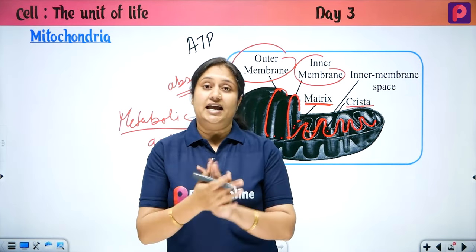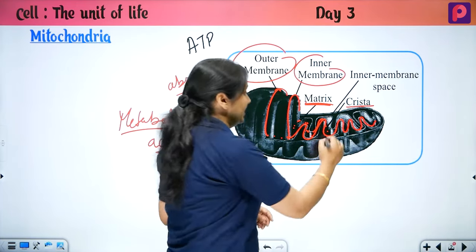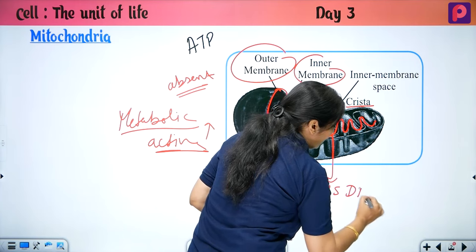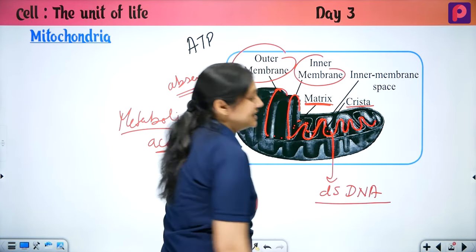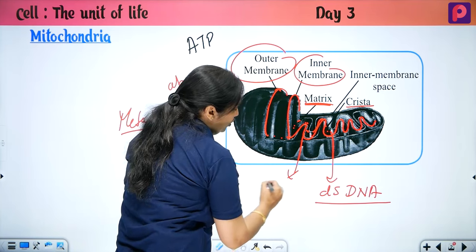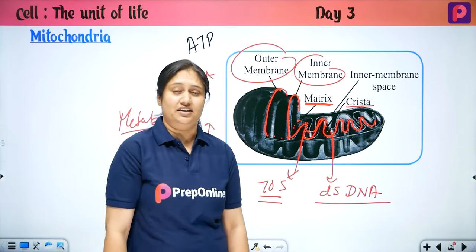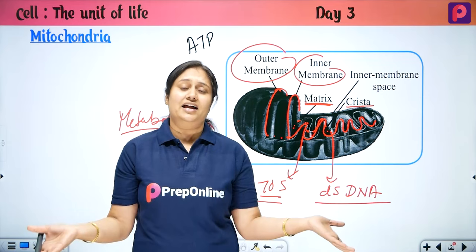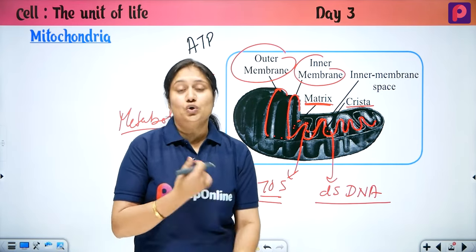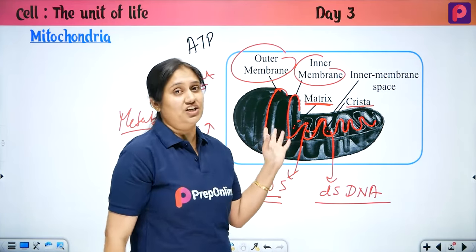Mitochondria also has its own DNA. How is that DNA? It is a double-stranded circular DNA, which is prokaryotic in nature. We also see a 70S type of ribosome here, which is also prokaryotic. So we say for this organelle — it is a cell within a cell — because inside a eukaryotic cell, there is a prokaryotic cell-type structure.